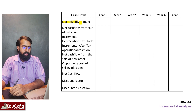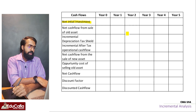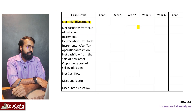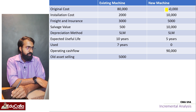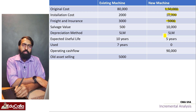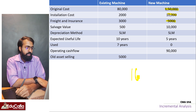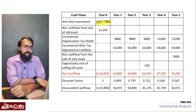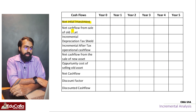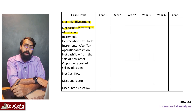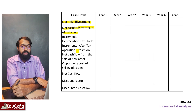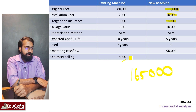Net initial investment. What's the net initial investment? Original cost - the new machine is $50,000, installation cost $10,000. The net initial investment is $60,000.